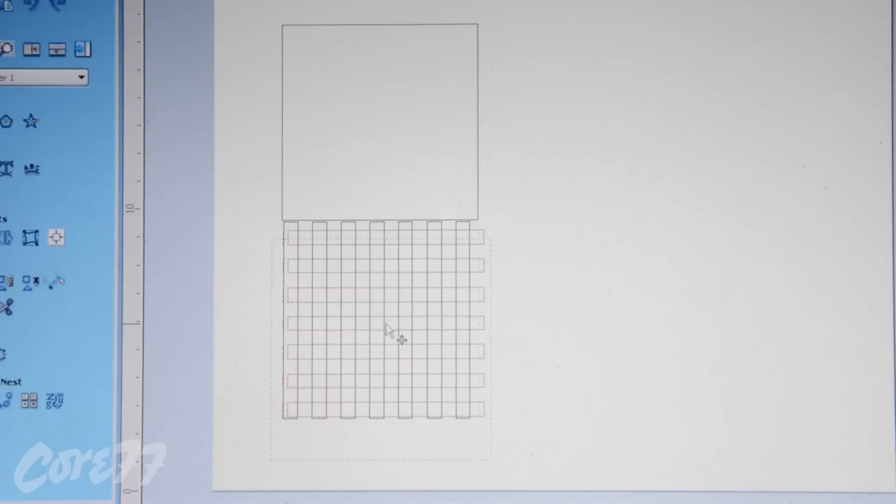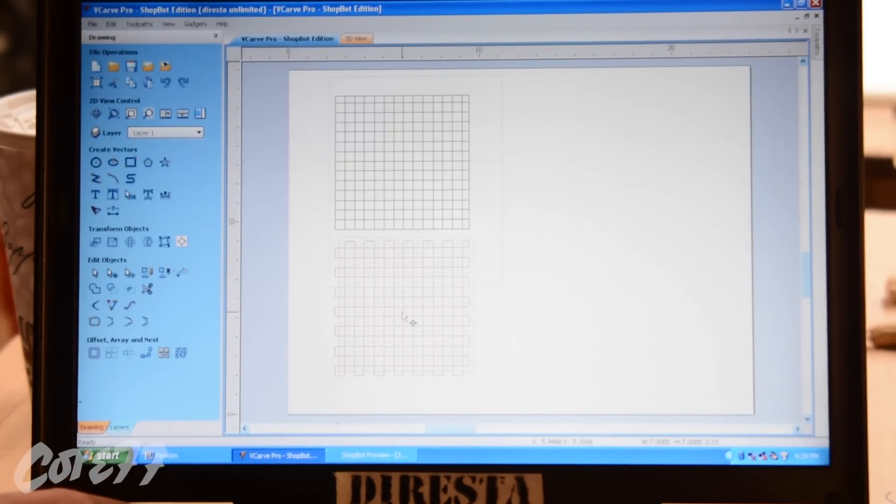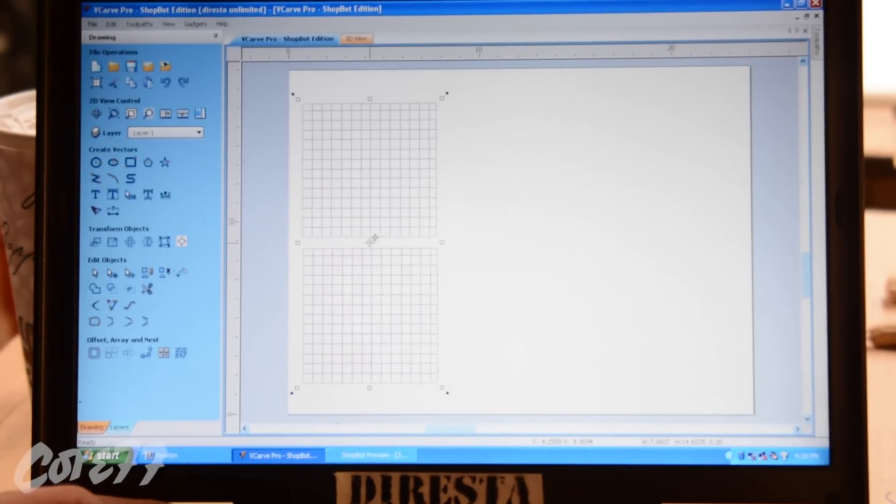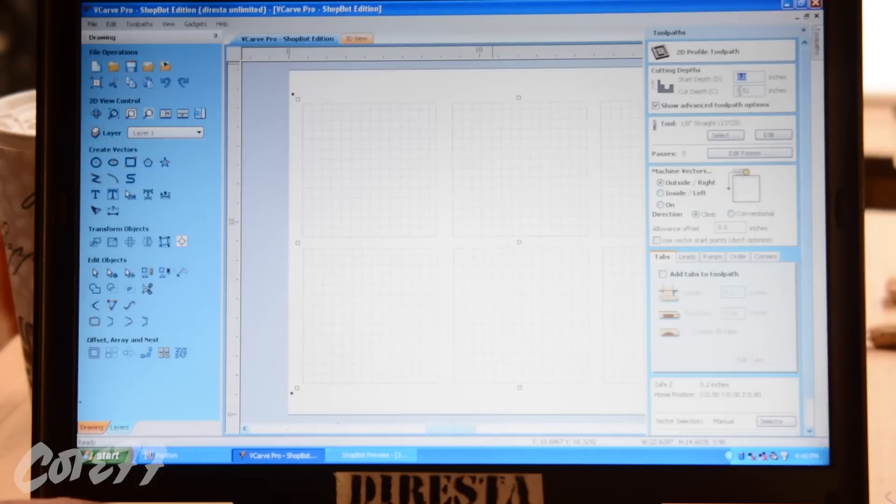Each one of these rectangles are going to overlap one another and basically make a checkerboard pattern inside of that 7 by 7 inch square. We're going to make a big cube so we're going to need six sides, and that's why I'm making six panels here.